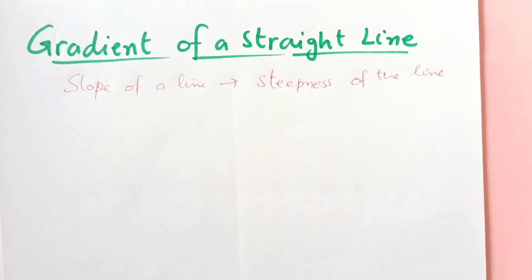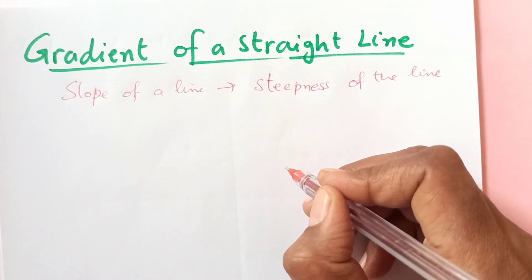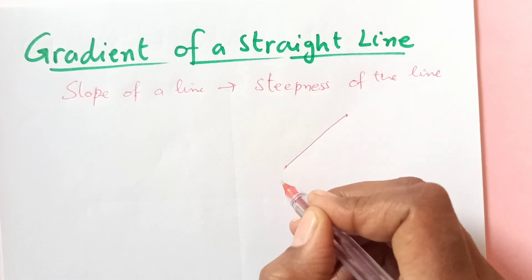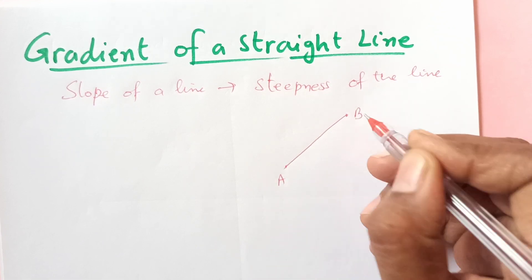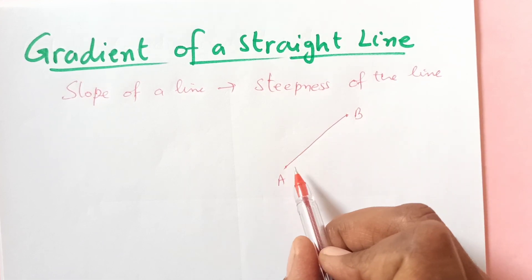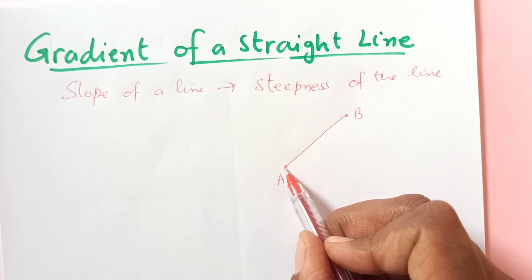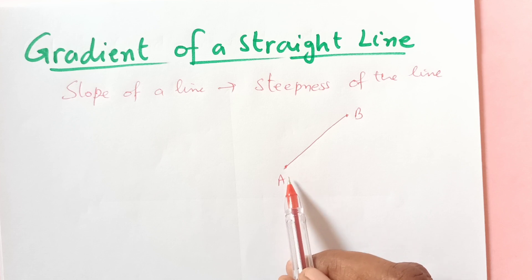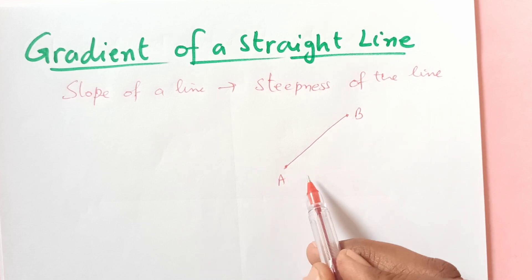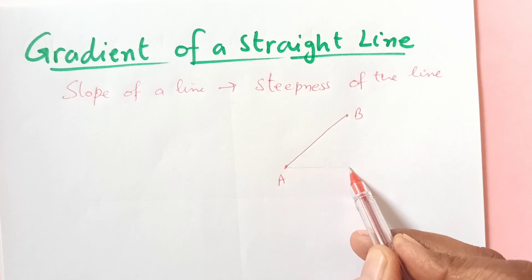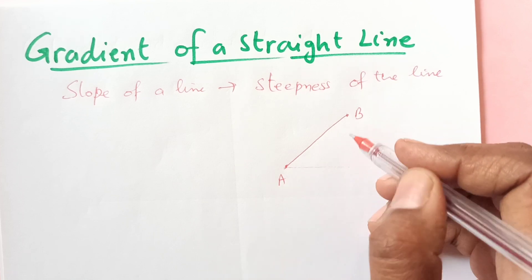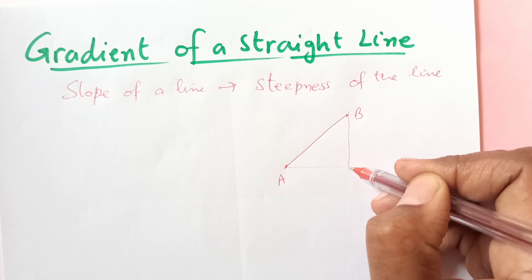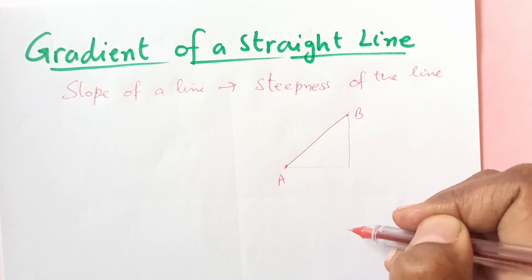So steepness of the line, let's say I am taking this line. This has point A and B. So actually what happened here is the coordinates at A moved up to B. So for every one unit move towards the right, the gradient will tell you how much the line moves up, or it may be down also.